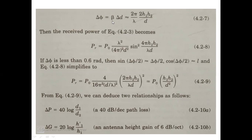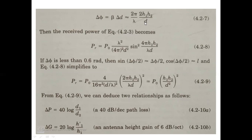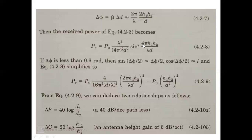Now substitute this phase difference Δφ back into the received power equation. We have: Pr = P0 · (λ/(4πD))² · 4sin²(Δφ/2). Substituting Δφ = 4πH1H2/(λD), we get Δφ/2 = 2πH1H2/(λD). So the equation becomes: Pr = P0 · (λ²/(16π²D²)) · 4sin²(2πH1H2/(λD)).